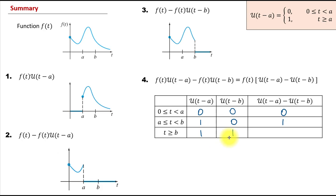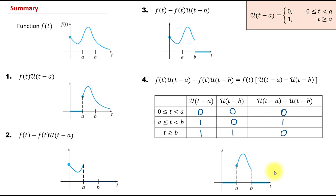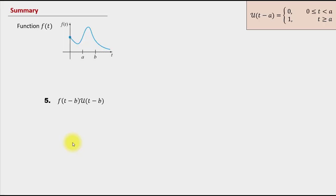What does this mean? Function f of t is being multiplied by 0 on the interval from 0 to a, so the product is 0. Then f of t is multiplied by 1 on the interval from a to b, so the result is f of t. After b, f of t is multiplied by 0 again, giving 0. In other words, f of t is only turned on on the interval from a to b — and that's exactly the portion we see in the graph. You just need to remember that this structure turns f of t on between values a and b.